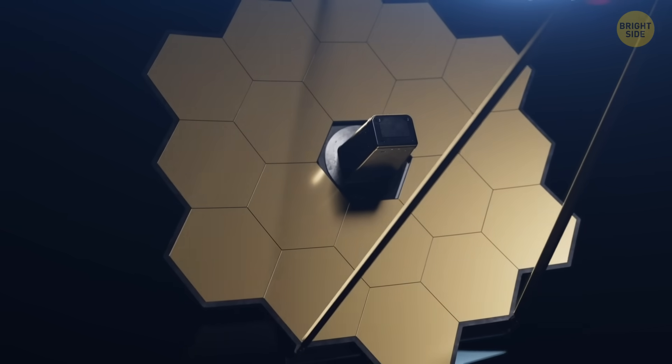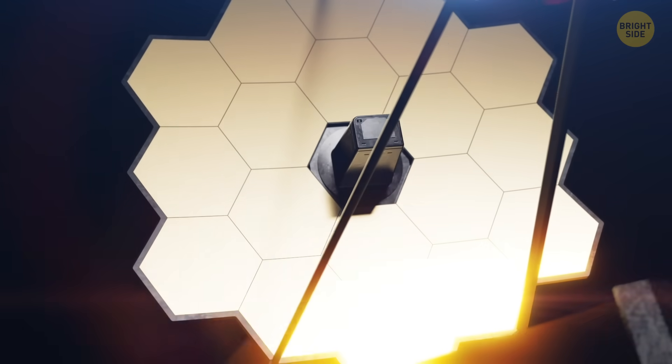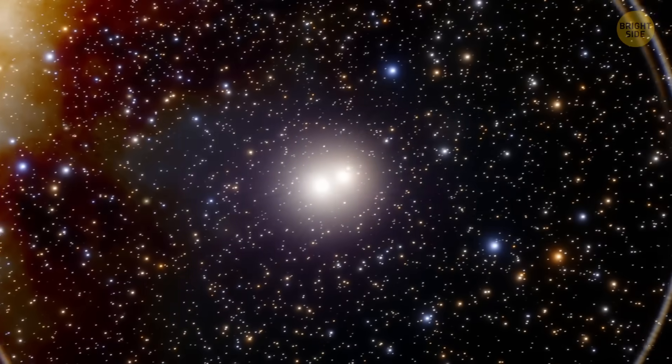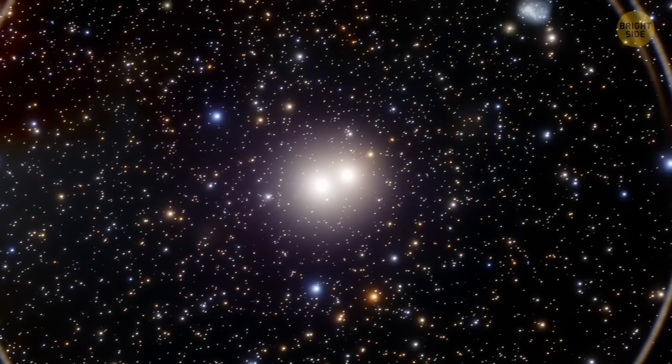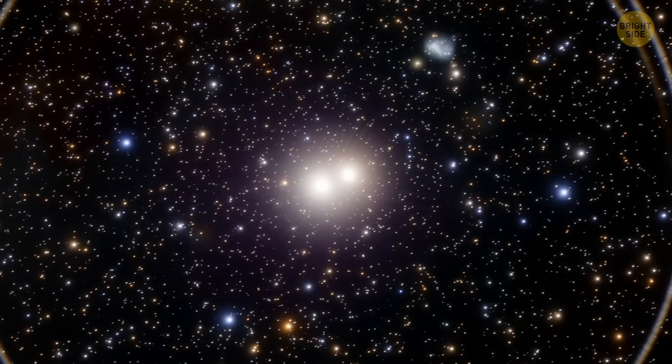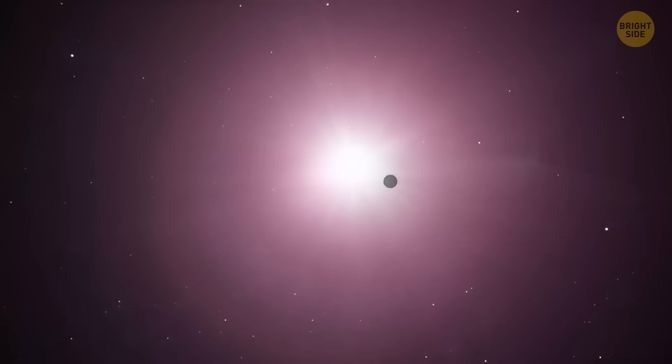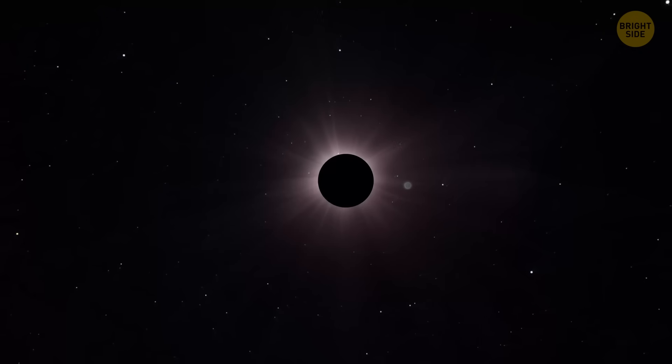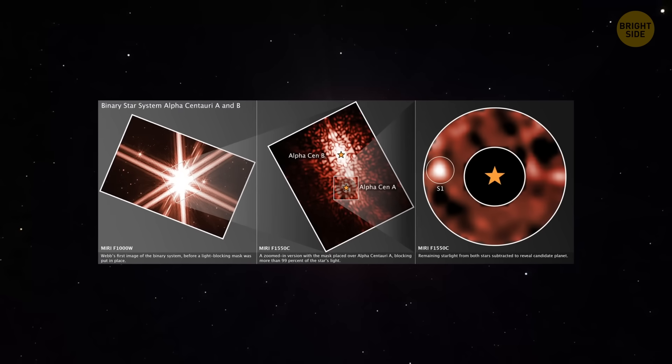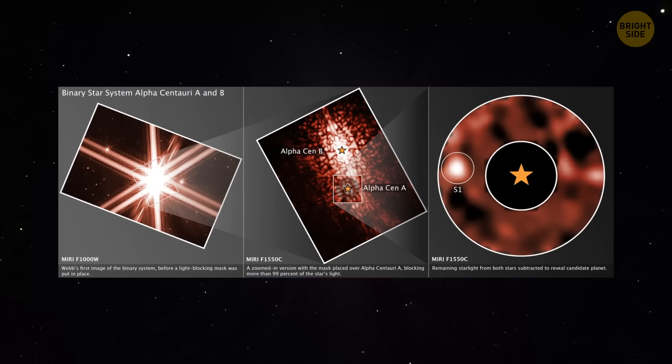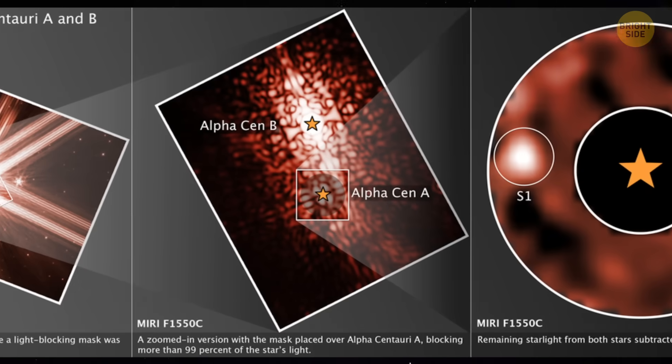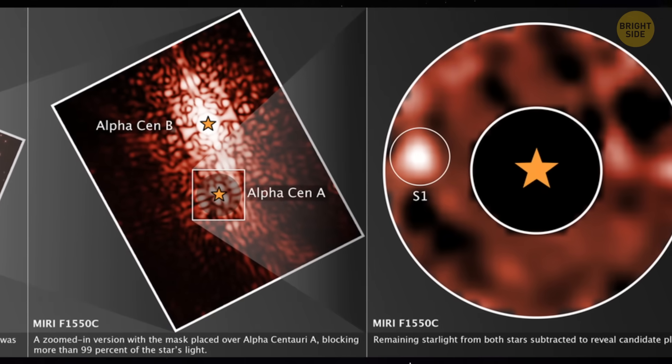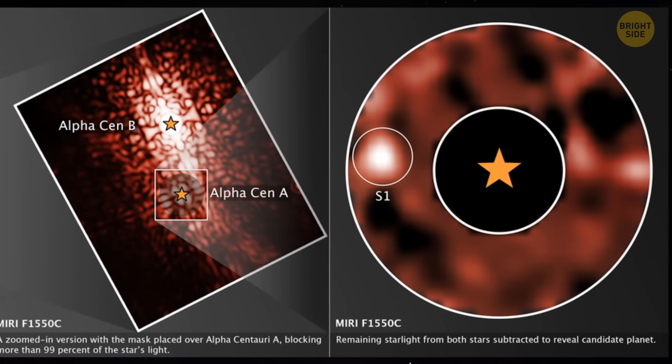The James Webb telescope had a hard time spotting S1. Alpha Centauri A, the star it orbits, is so bright that it was like trying to look for a firefly sitting next to a car's headlights. The telescope had to put on special cosmic sunglasses called a coronagraph to block the star's glare. And for a moment, in 2024, it worked. The scientists saw an object over 10,000 times fainter than Alpha Centauri A, but twice as far from it as our Earth is from the Sun.